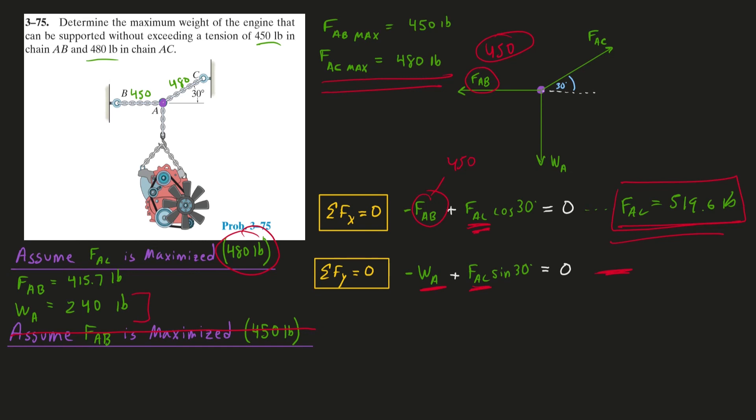All right, hopefully that made sense. This was a level 1 failure criteria problem. They all operate in this way. Of course you can imagine that your FBD could be more complicated with more forces and different stuff like that, but it's the same process. So if you have any questions on this, feel free to let me know in the comments and I'll do my best to answer.